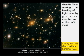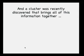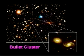Recently there was a cluster observed that brings together all this information — information from the gas, information from the galaxies, information from gravitational lensing — and helps us have a picture of what's really going on inside the cluster. This cluster was nicknamed the bullet cluster.